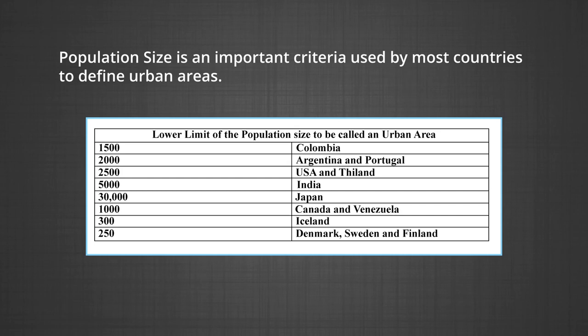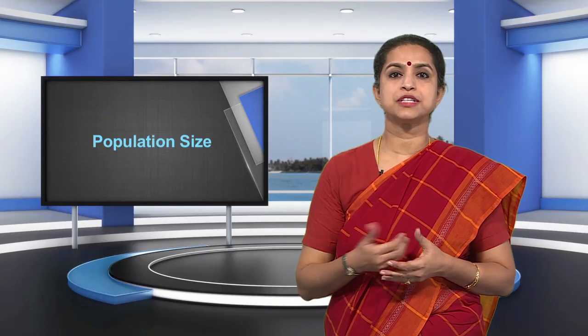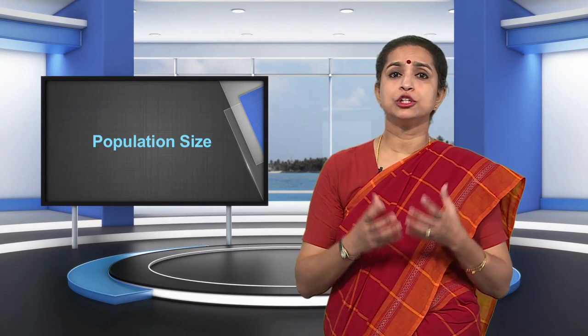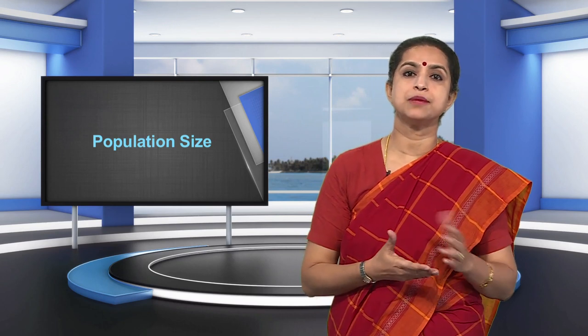Population size is an important criteria used by most countries to define urban areas. The lower limit of population size for a settlement to be designated as urban is 1,500 in Colombia, 2,000 in Argentina and Portugal, 2,500 in USA and Thailand, 5,000 in India, and 30,000 in Japan. Apart from the size of population, a density of 400 persons per square kilometer and the share of non-agricultural workers are also taken into consideration in India.